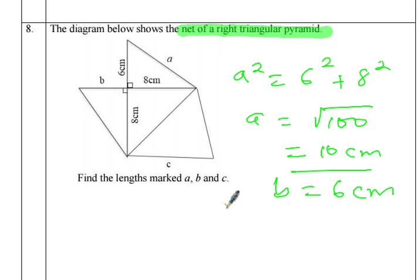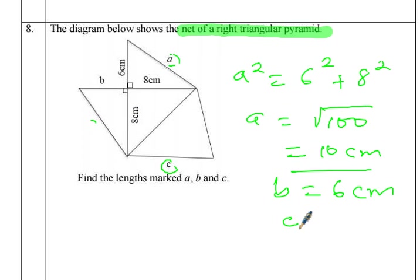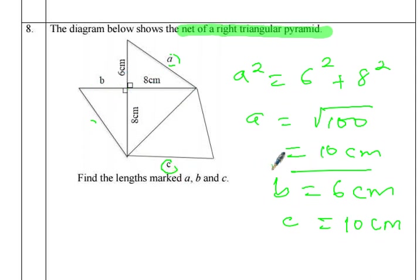For C: when we fold so that this face comes up and stands, we need it to cover the corresponding side. That means C should equal this side here, which is 10 centimetres. If you want to see this clearly, try cutting out this shape from a piece of paper and folding it — you will see exactly what I'm talking about.